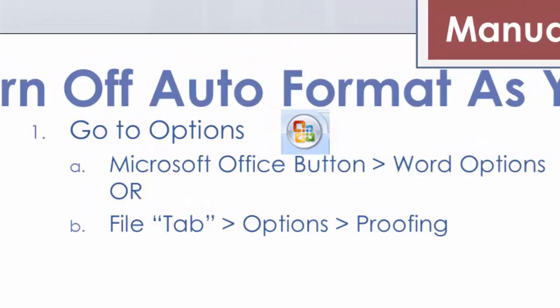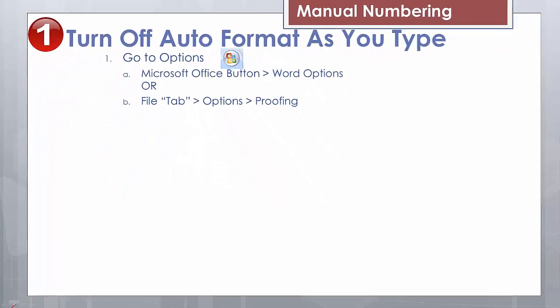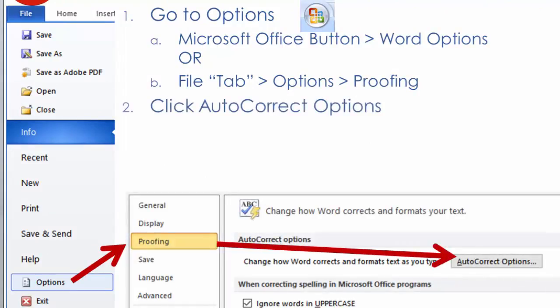Getting to the Options menu may differ based upon the version you have of Microsoft Word. You'll either use the Microsoft Office button to get to Word Options, or, as in my case, choose the File tab, then Options, then Proofing.